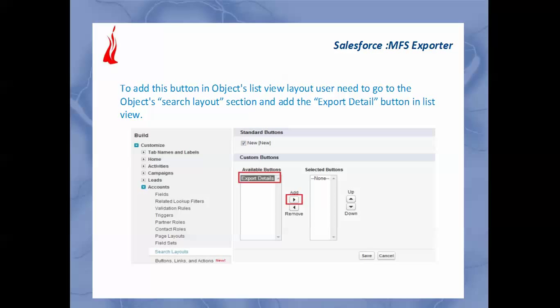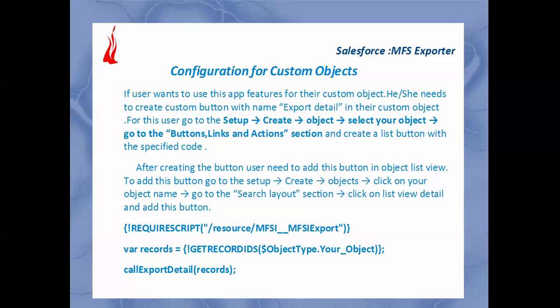After saving, we can see that button in the Account list view layout and proceed with the functionality of this app. The third point is how to configure this button for any custom object. Custom objects are those objects which are created by the user as per their need. If the user wants to use this app's features for their custom object, we need to create a custom button with the name 'Export Detail'.